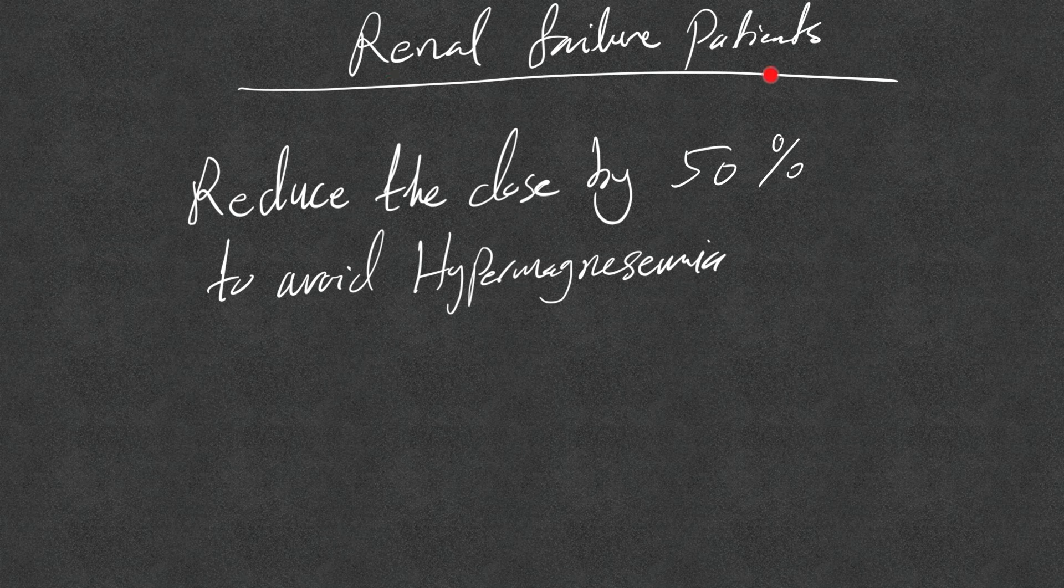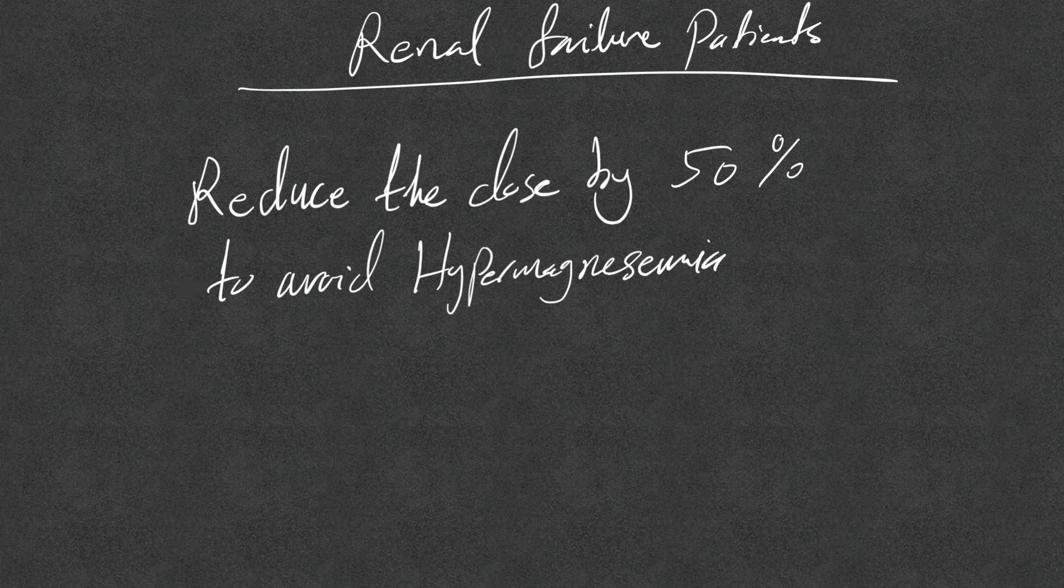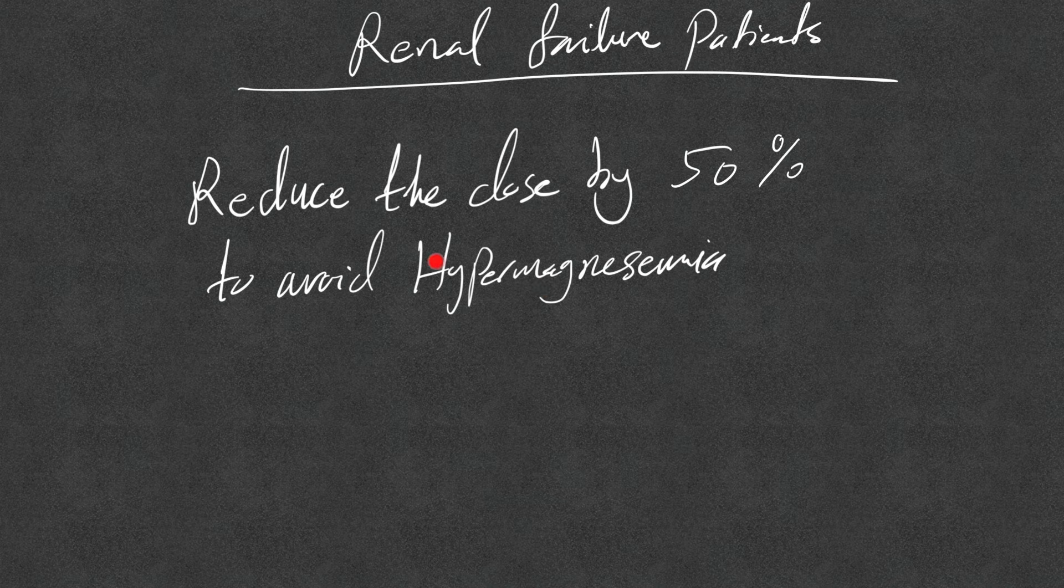Remember, renal failure patients, whether acute or chronic, we reduce the doses we mentioned by 50% to avoid hypermagnesemia. The kidney is the only organ that regulates magnesium level, that's why it's important that we reduce the dose in renal failure patients.